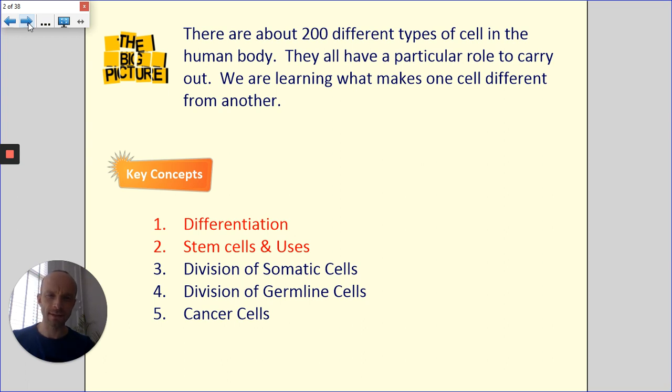So last lesson we were reviewing National 5 and we were talking about specialized cells and what they were. But how do cells become specialized is really what we're looking at today. We said that the body is made up of about 200 different types of cell, but you started off as a single cell as a zygote. So how did you end up looking the way you do now?